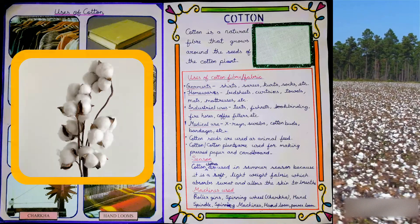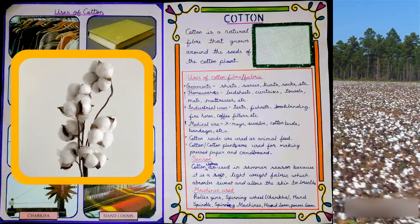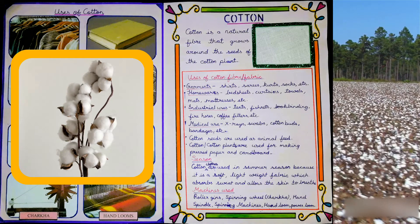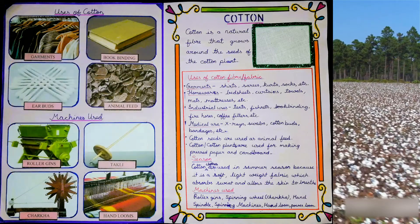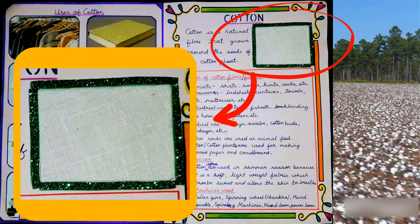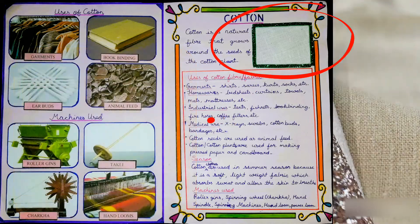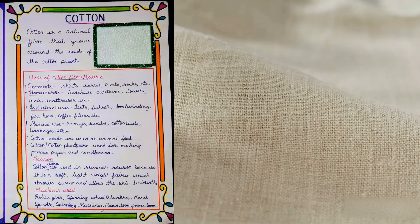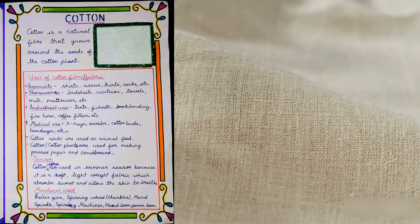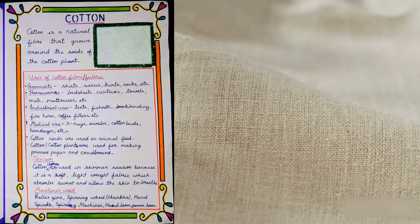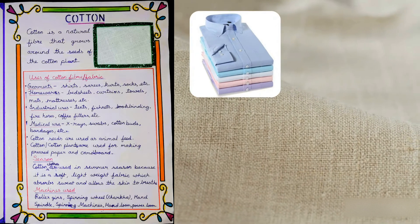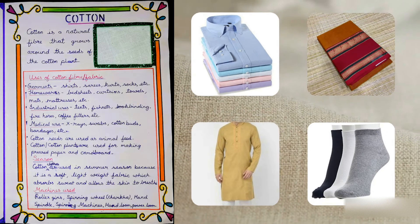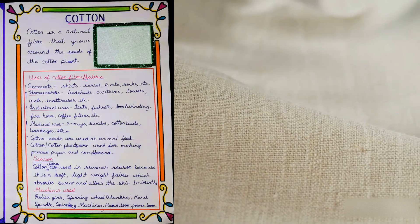Cotton is a natural fiber that grows around the seeds of the cotton plant. This is a sample of cotton fabric. Uses of cotton fiber or fabric include making garments such as shirts, saris, kurta, and socks.